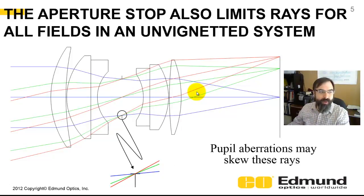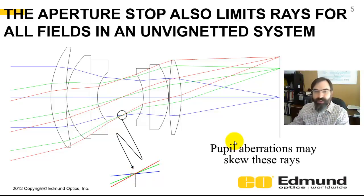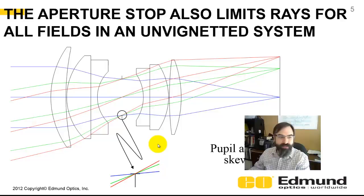The aperture stop also limits the ray bundle for the off-axis beams for no vignetting. Here's a case where this lens does not vignette at all. If I've blown up the edge of this aperture stop, all the different fields, which are different colors, they all go through the edge of the aperture stop. An advanced topic is pupil aberrations, which will skew these rays.